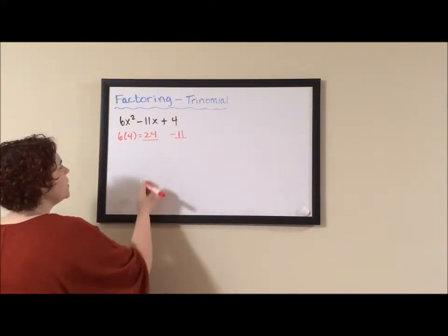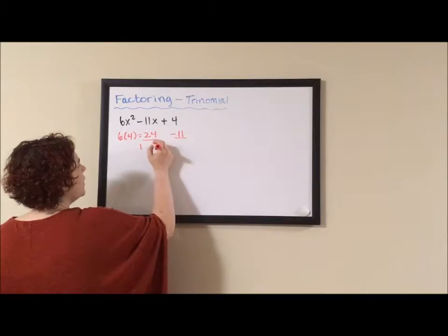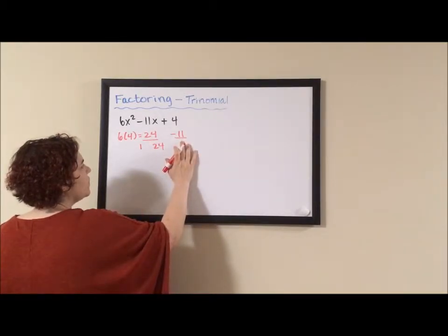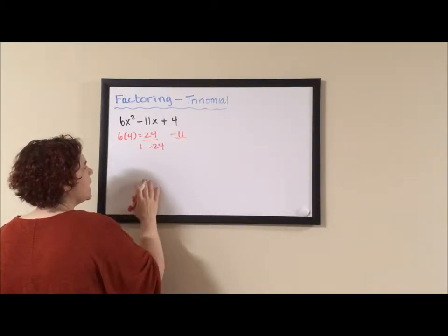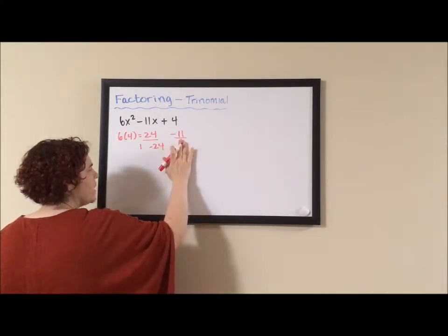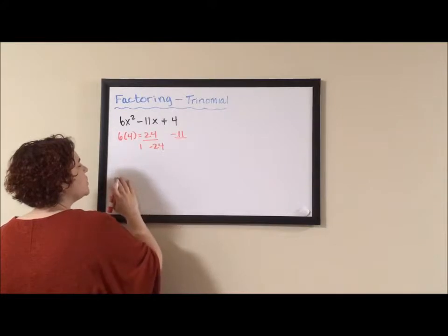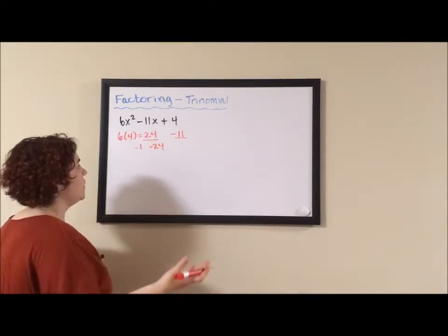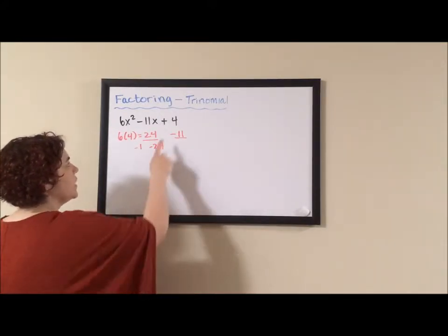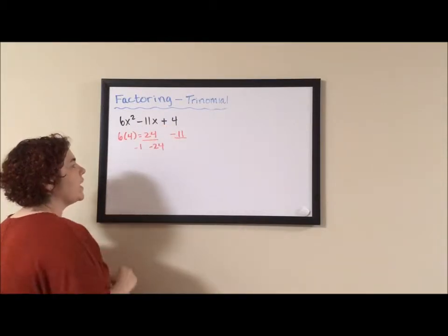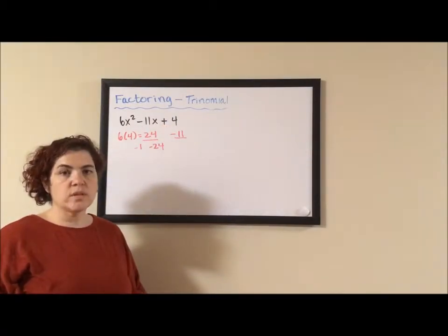So my factored pairs of 24, I start with 1 and 24. Because 11 is negative, I know my big factor has to be negative because my big factor has to match the sign of my B term. Because 24 is positive, I know they both have to be negative because this tells us we're getting there through addition and that tells us we're adding two negative terms together.